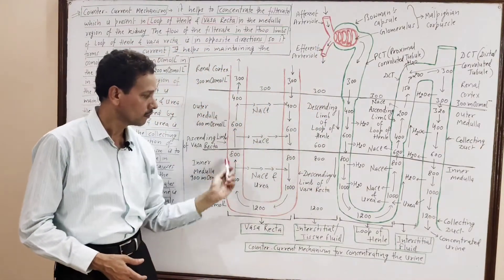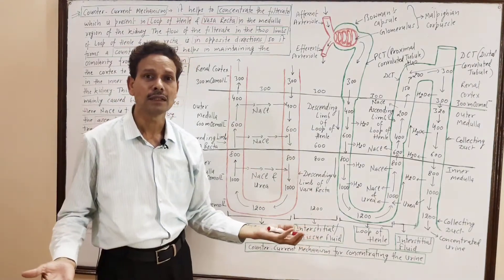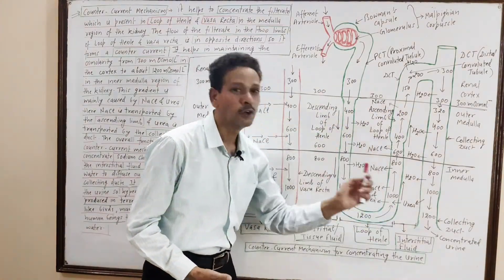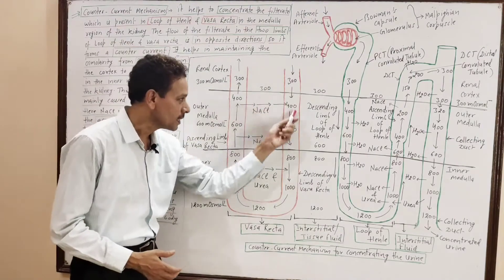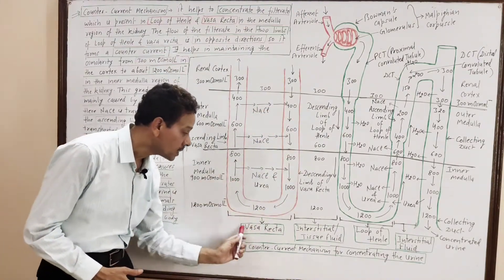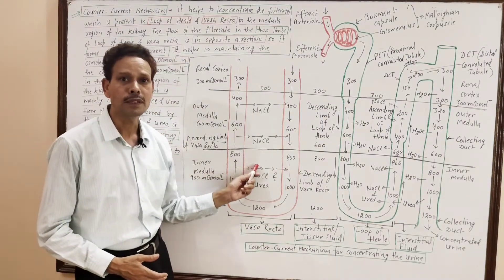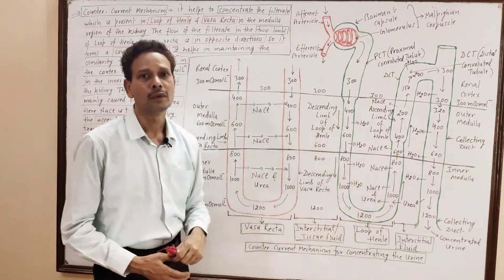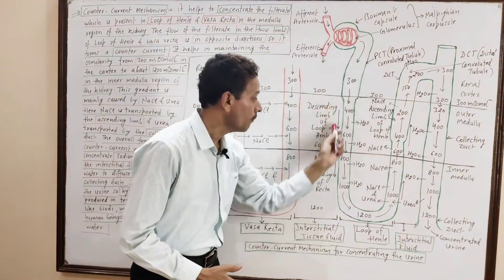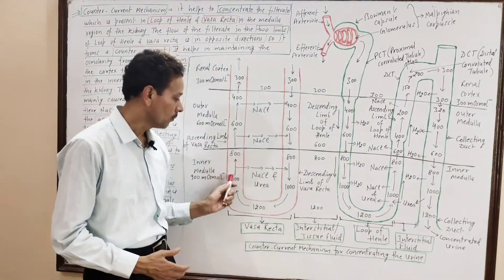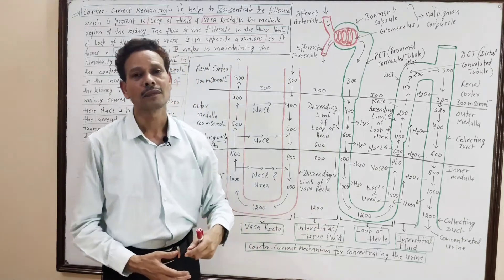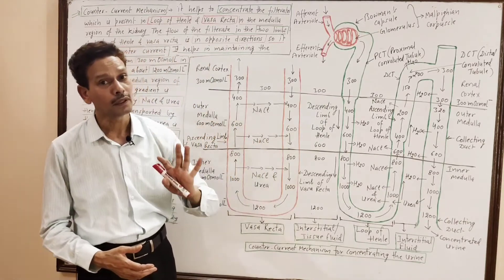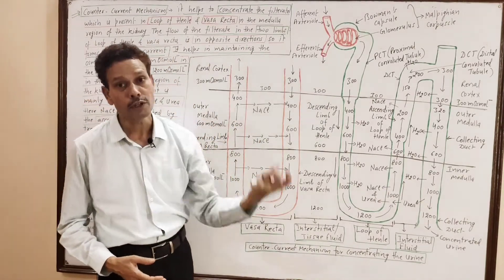This loop of blood vessel present over the loop of Henle is named the vasa recta. Both the vasa recta — the loop of blood vessel — and the loop of Henle play a significant role in the formation of concentrated urine to conserve body water.